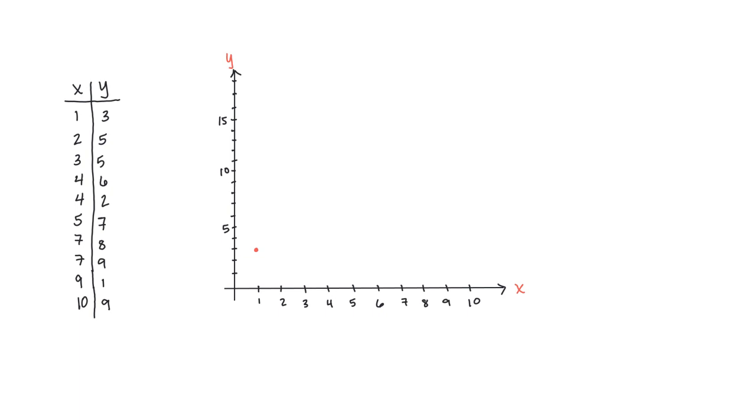Our second data point is 2, 5, so 2 on the x and 5 on the y. So we get our second data point there. Then we have 3, 5, so 3 on the x and 5 on the y. Here's another point. And we'll continue this process until we have all of our data points.